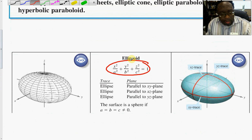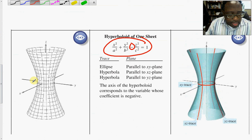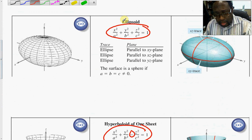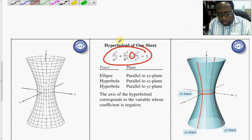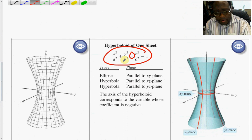Secondly, hyperboloids of one sheet. The equations are somewhat similar to the ellipsoid, but the key difference is a negative sign. Because of that negative, we form a ruling similar to what we saw with cylinders. The variable with the negative coefficient defines the axis of the hyperboloid. For this basic example, the Z variable has a negative coefficient, so the elongation of the hyperboloid of one sheet runs with respect to the Z-axis.